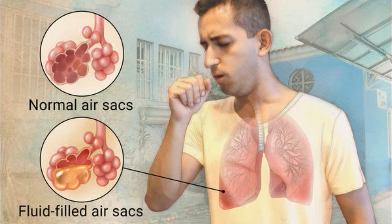Presenting Features: The presenting features of viral and bacterial pneumonia are similar. However, the symptoms of viral pneumonia may be more numerous than those of bacterial pneumonia. In children under 5 years of age who have cough or difficult breathing, with or without fever, pneumonia is diagnosed by the presence of either fast breathing or lower chest wall in-drawing, where the chest moves in or retracts during inhalation.